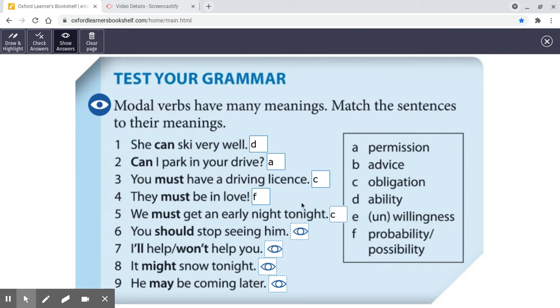you must have a driving license or you're not allowed to drive this car. We must get an early night tonight. Where's the obligation coming from, though? It's not coming from an outside source. It's coming from you inside, isn't it? You should stop seeing him. Well, that's obviously a recommendation. Seeing him in this sense means going out with somebody, to be in a relationship with somebody. You can say, are you seeing anyone at the moment? Which means, are you going out with anybody? Do you have a boyfriend or girlfriend?